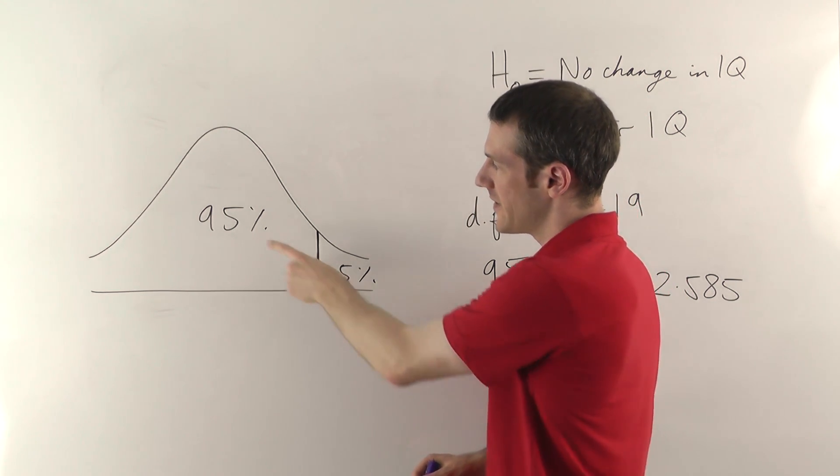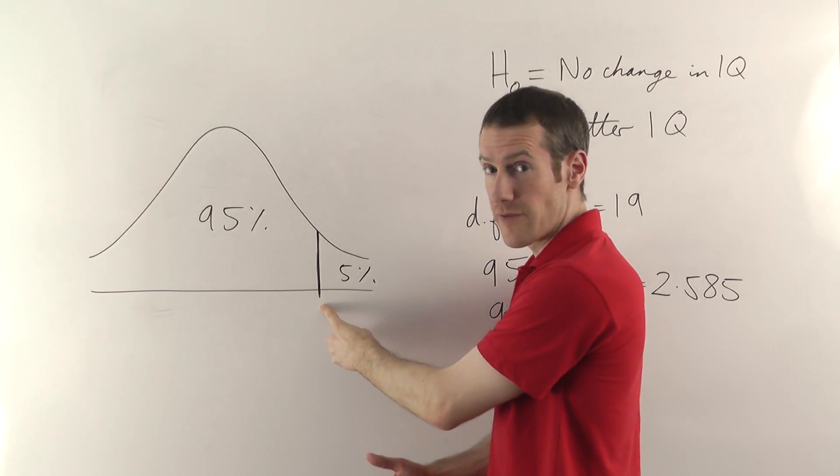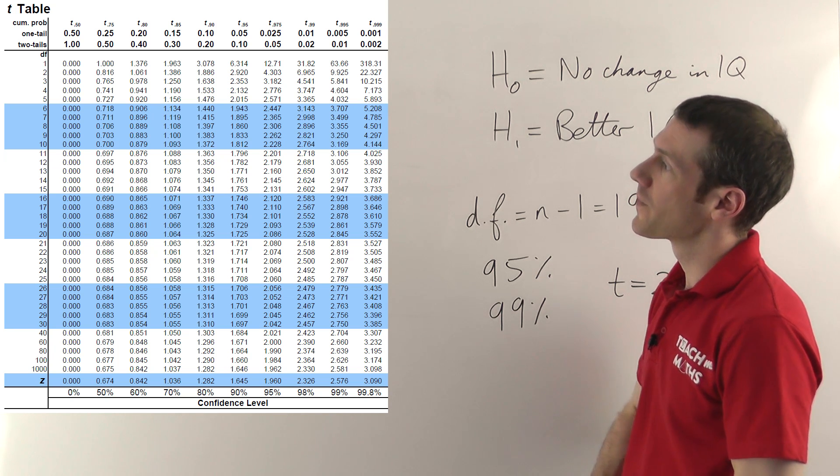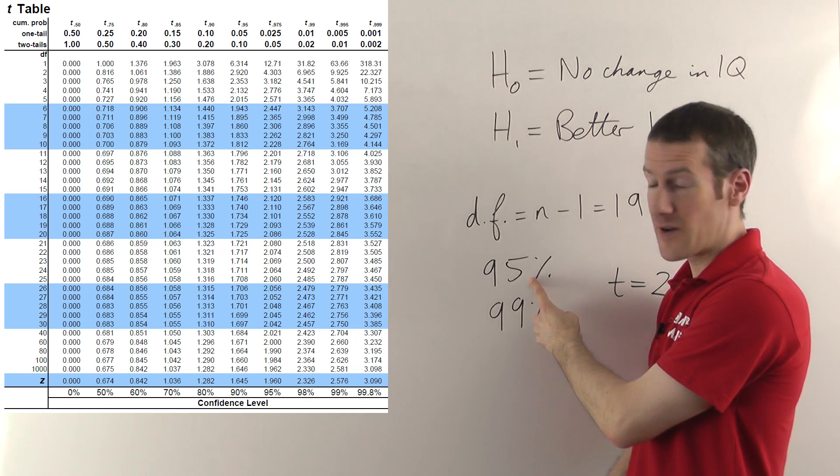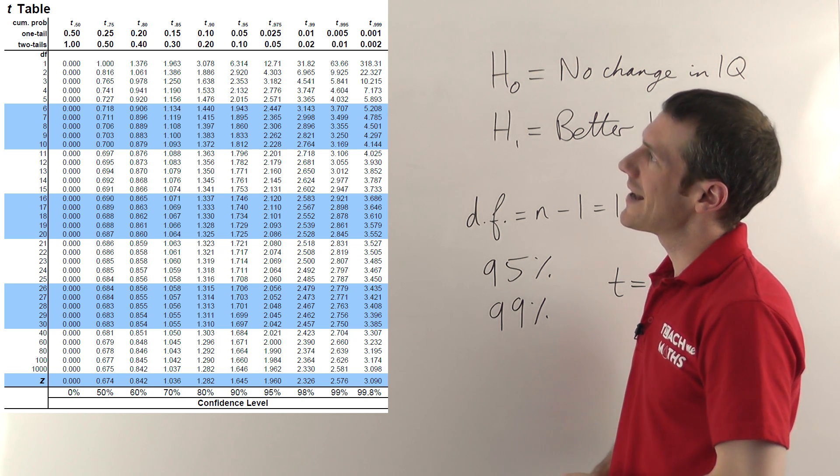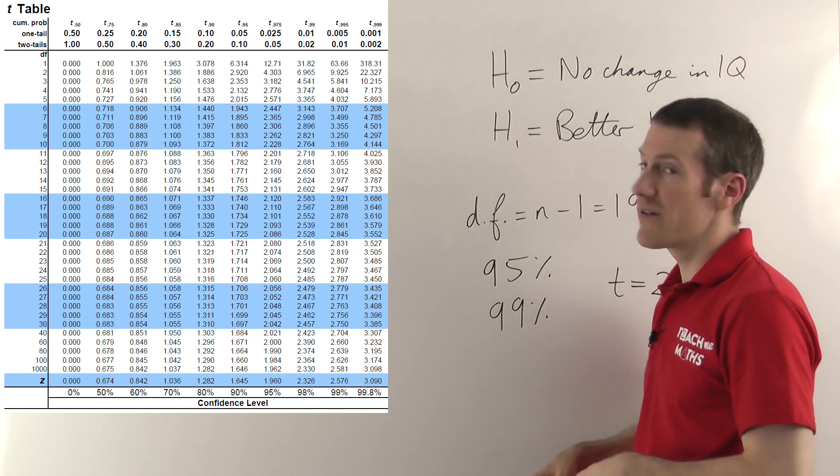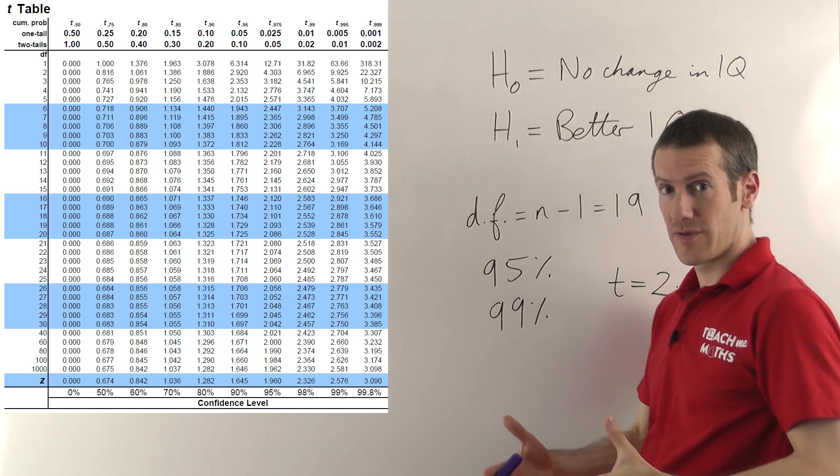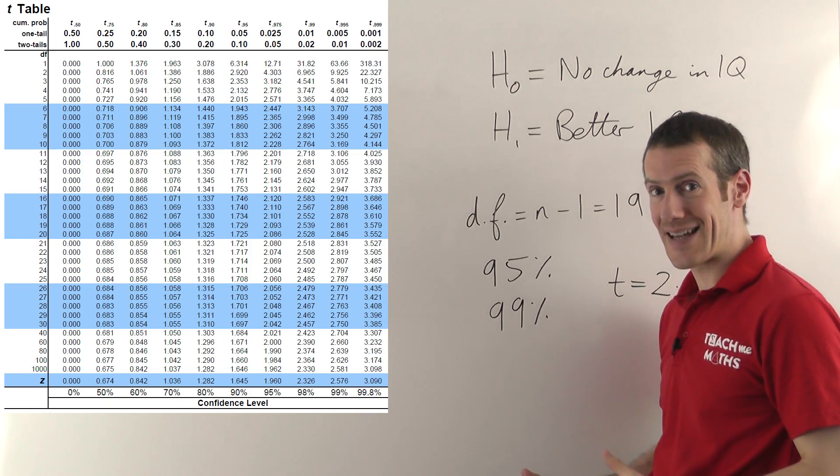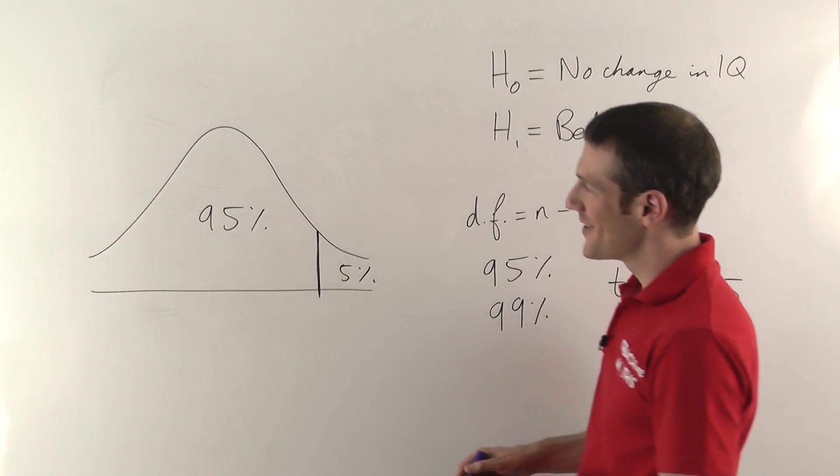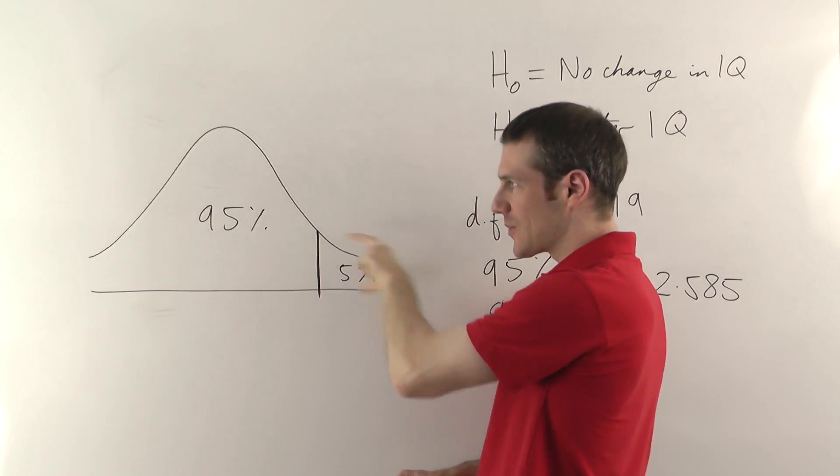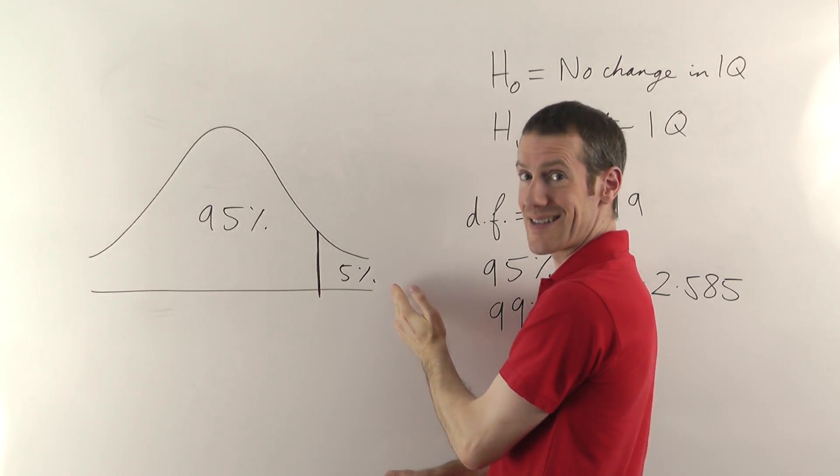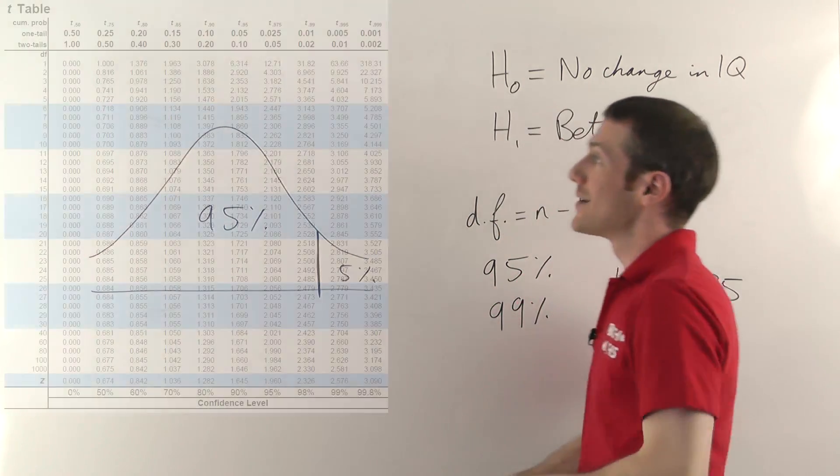To be 95% confident, that means we're going to pick a value here, such that 95% of the samples are here, and 5% is here. Now, the critical value for the 95% point is what we can read off from the table. So 19 degrees of freedom down the left hand side, 0.95 for 95% confident along the top. And what I was saying about one-tailed or two-tailed? We're expecting an improvement. Our H1 here is a better IQ. We're only expecting it to improve. We're not expecting it to get worse. So it's a one-tailed test.